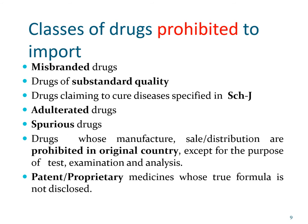There are some drugs for which you cannot even apply for import. The classes of drugs prohibited from import are: misbranded drugs, drugs which are substandard in some way, drugs claiming to cure diseases specified in Schedule J, and adulterated drugs and spurious drugs. Drugs whose manufacture, sale, and distribution is prohibited in their original country are also banned from import.